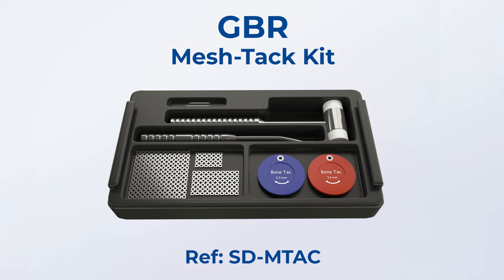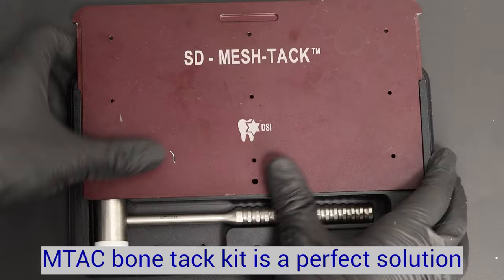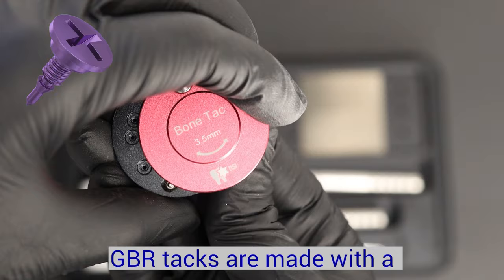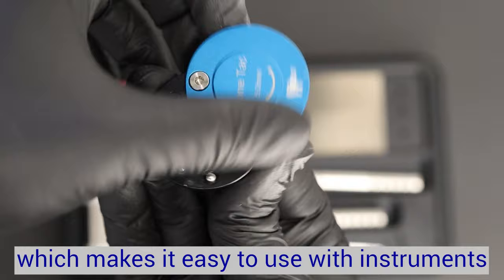The third kit I want to demonstrate today is the mesh and tag. Efficient system for attaching and securing regenerative membranes to the bone using bone tags. Made of grade 5 titanium and with this special design, they demonstrate excellent results when used with collagen and PTFE membranes and with mesh titanium plates as well.